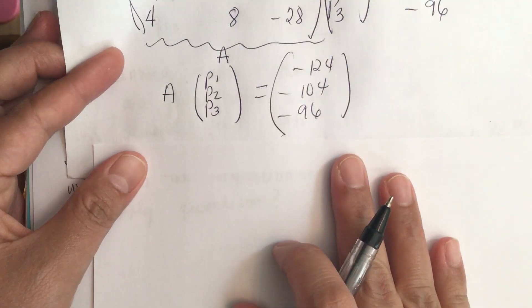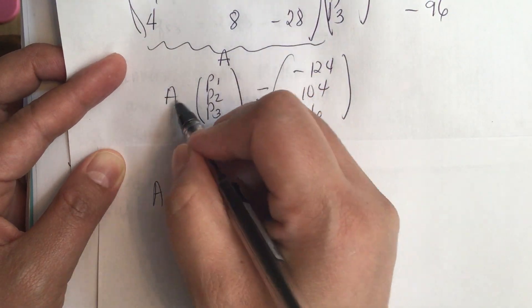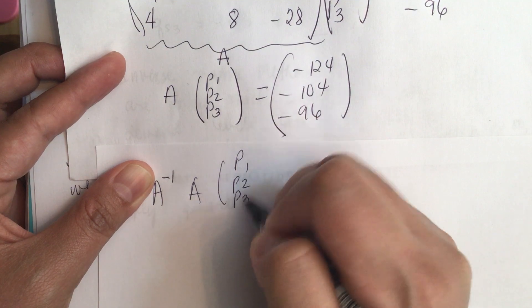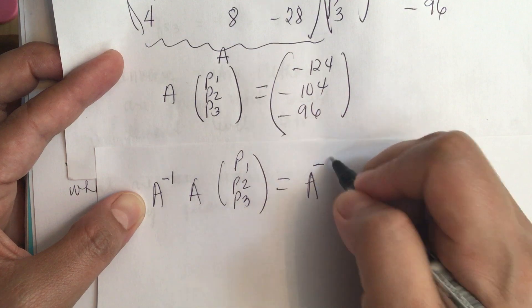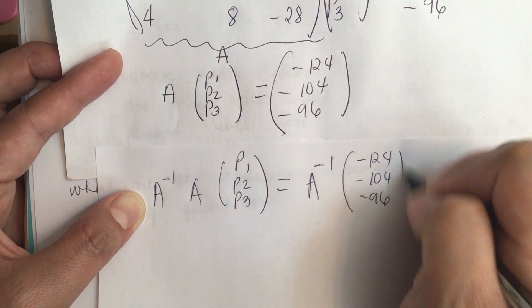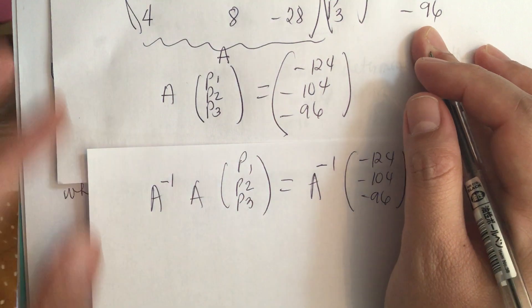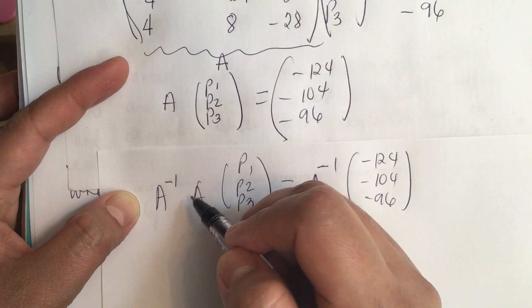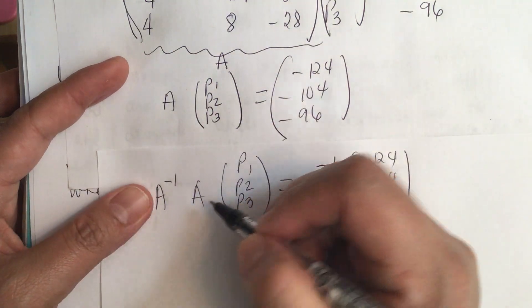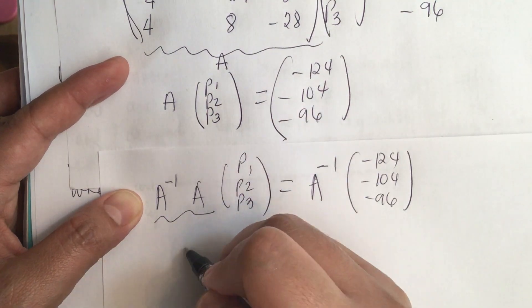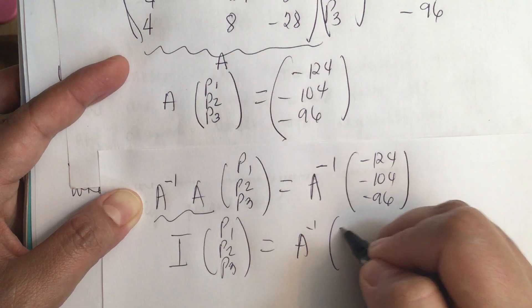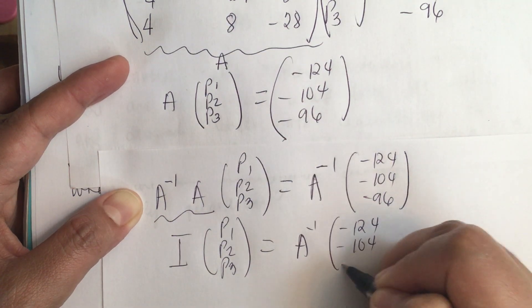Now if we take the inverse of A, we have A times [p1, p2, p3] equals the right-hand side vector. Multiplying both sides by A inverse: A inverse times A gives the identity matrix, so [p1, p2, p3] equals A inverse times [minus 124, minus 104, minus 96].